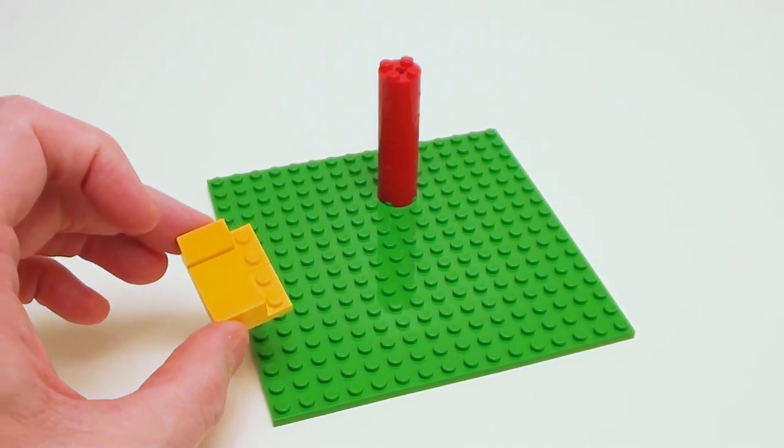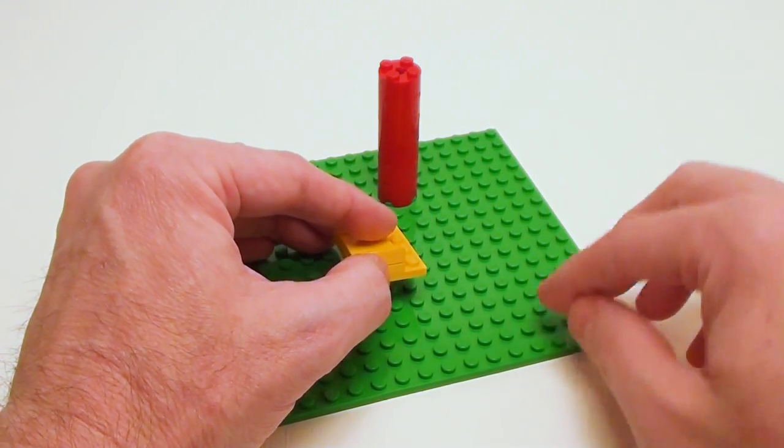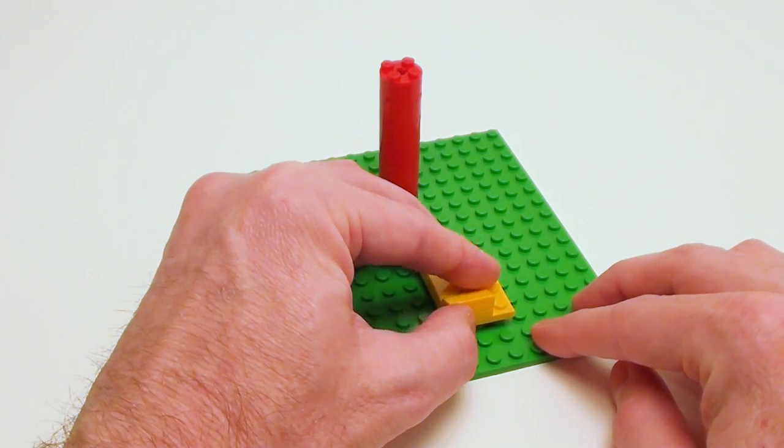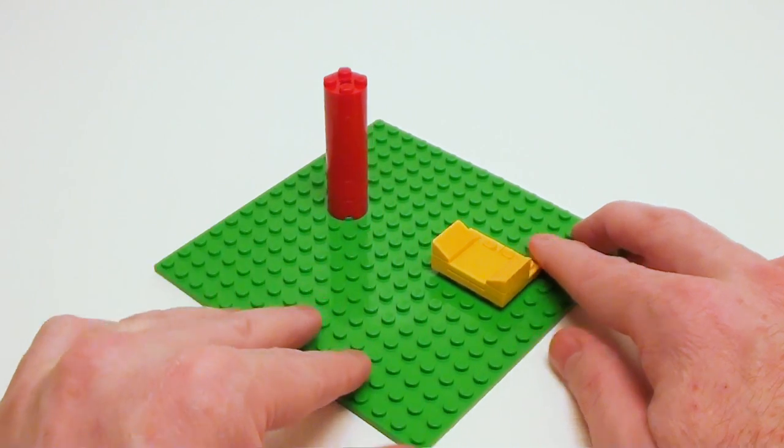Now let's set our bottom portion of our slide. Now this is very critical. I want to come over one stud this way and six studs outwards. So I'm going to set this right there. So you have five studs in between both structures.